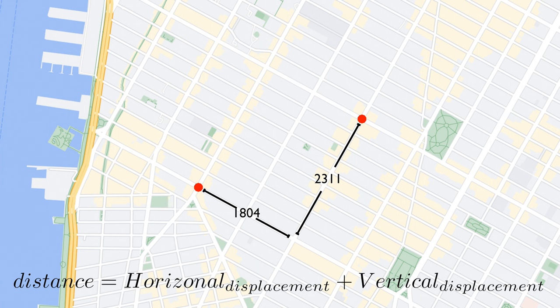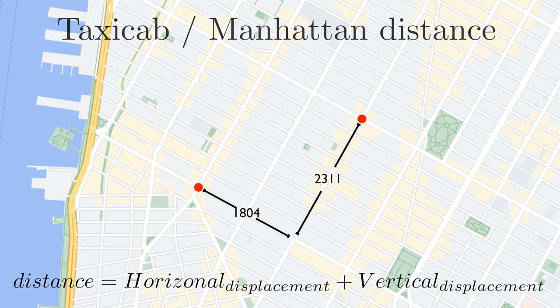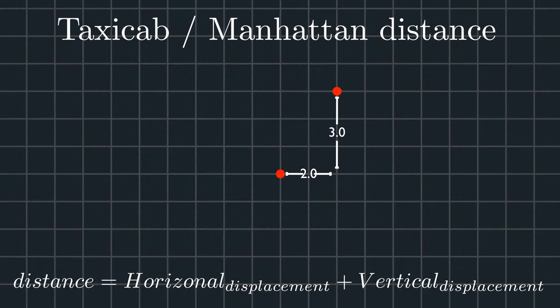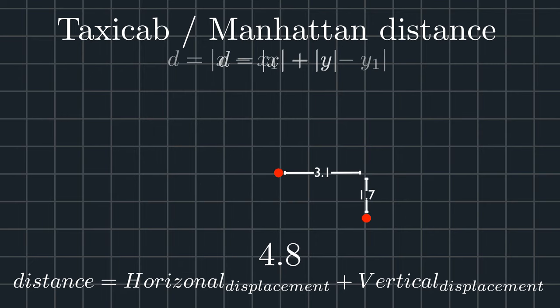This metric of finding distance is called the taxi cab distance, or Manhattan distance because of how it works on grid-like systems. The formula to find taxi cab distance is the absolute value of x plus the absolute value of y. Or, displace it as the absolute value of x minus a plus the absolute value of y minus b to find distance between two points.